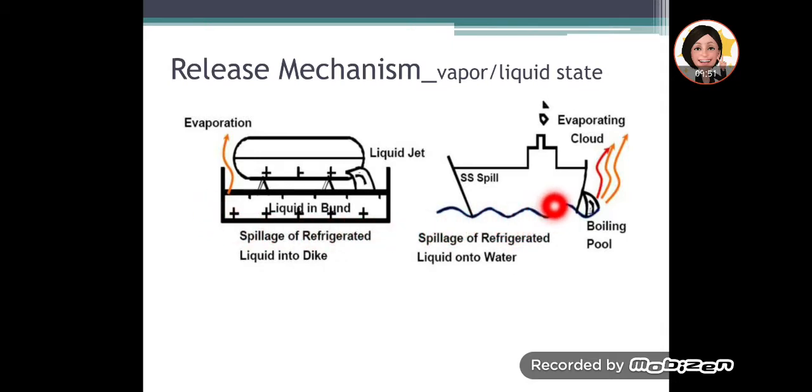It can also happen in vessels like ships that is being transported on sea, on water. If there is a spillage, it can actually produce boiling pool which contains the materials, the chemicals, as well as also cause evaporating clouds.